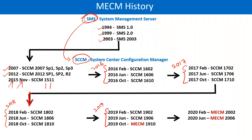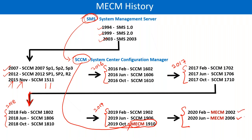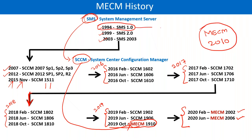From 2019 October, they changed the name again. Version 1910 is now MECM — Microsoft Endpoint Configuration Manager. It is no more SCCM. Then in 2020, MECM 2002, MECM 2006, and the latest and greatest version is MECM 2010. It started from 1994, so this product has been in the market for more than 25 years.